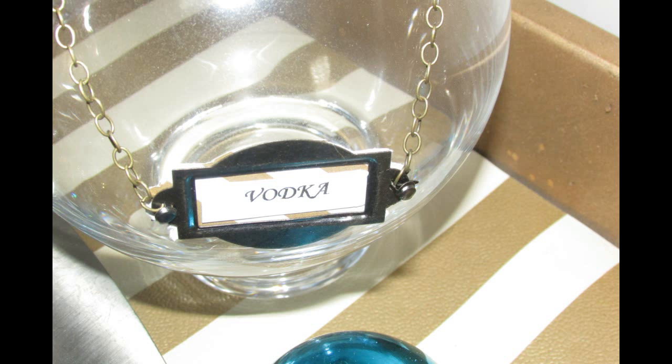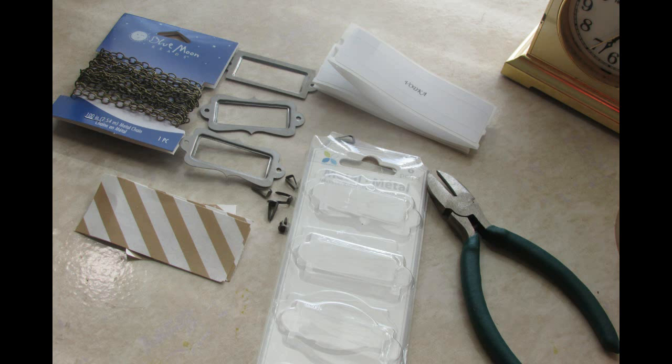The items that you're going to need to complete this project are metal chains, cardstock or scrapbook paper of your choice, the metal label kit, wire cutters, and the labels. All of my supplies came from Joann, and the metal chain comes in various colors. I chose the rust copper type color.